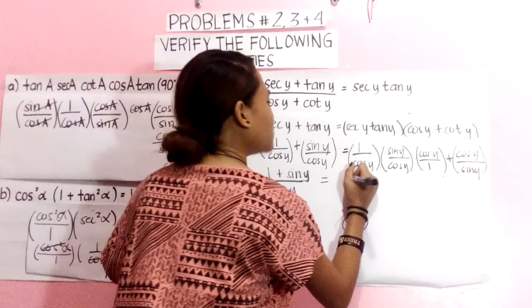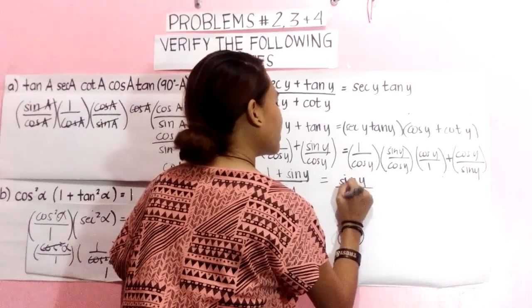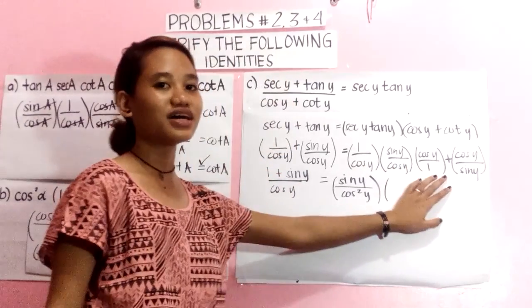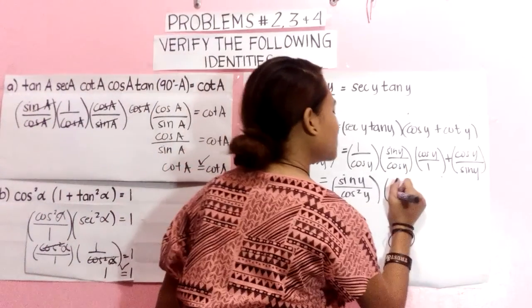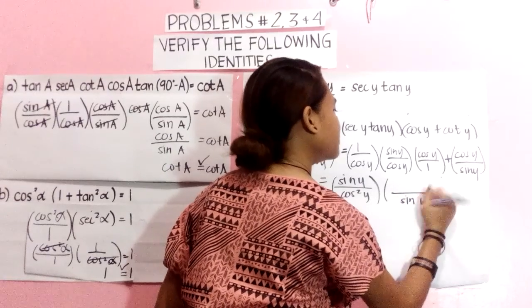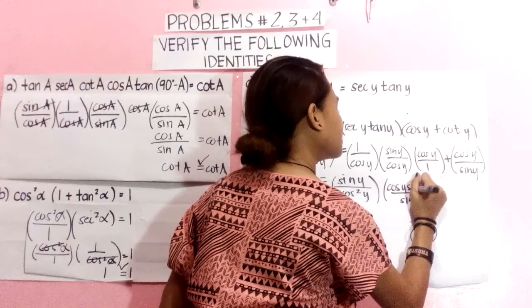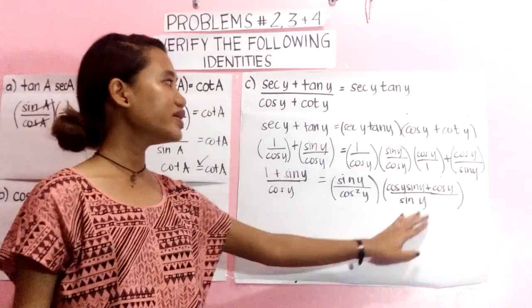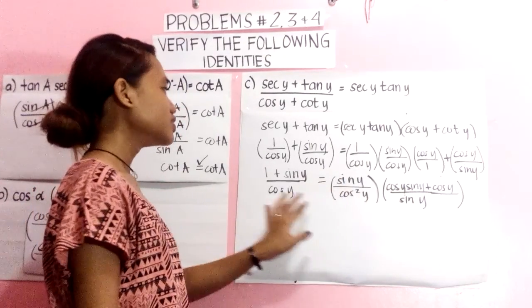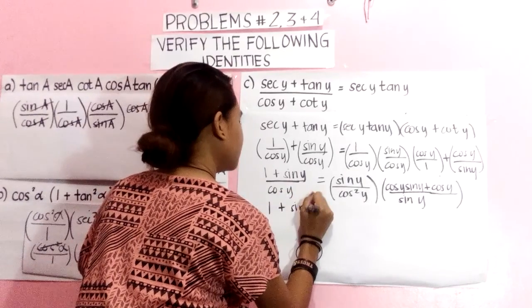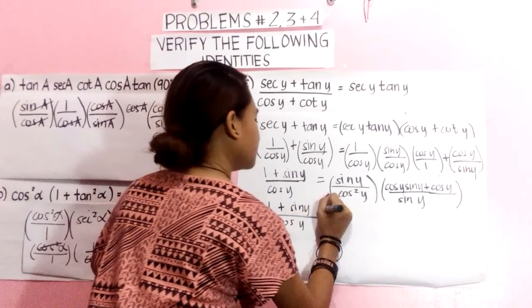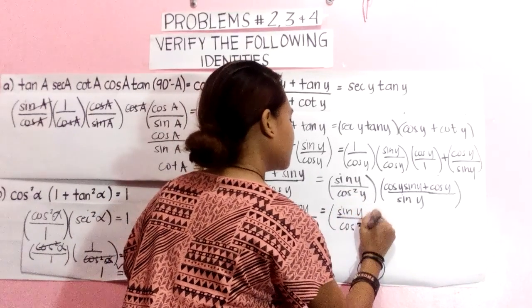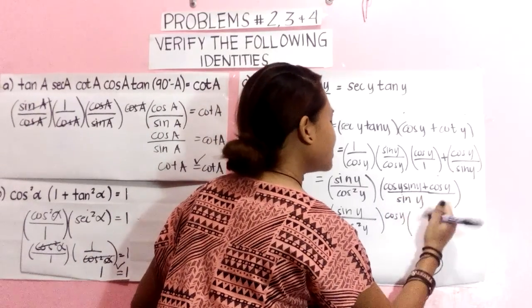That is why we have sin Y over cos squared Y. And get the LCD of this one. We will get the common factor of this one, which is cos Y.